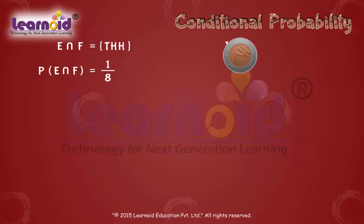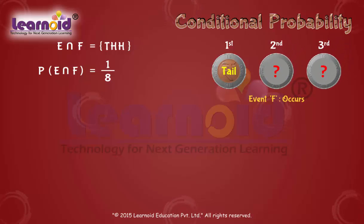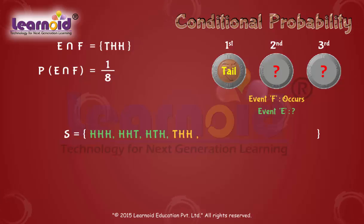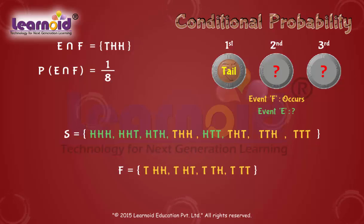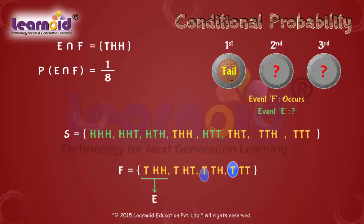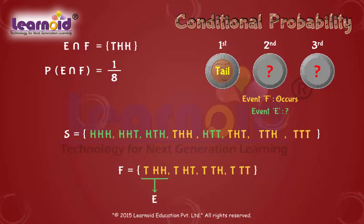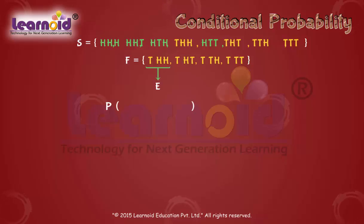Now, if we know that the first coin shows tail, that is event F occurs, what is the probability that it can also be an E event? Once we fix that the first coin shows tail, we reduce the total possible outcomes from 8 in set S to 4 in set F. Out of 4 outcomes in set F, the possibility that the outcome is of event E is 1 out of 4. So, probability of E given that event F has occurred is 1 by 4.